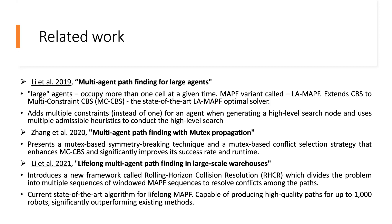The current state-of-the-art is a technique called Rolling Horizon Collision Resolution, developed in collaboration with USC and Amazon Robotics. This method is capable of producing high-quality paths for up to thousands of robots, significantly outperforming existing methods in the literature.